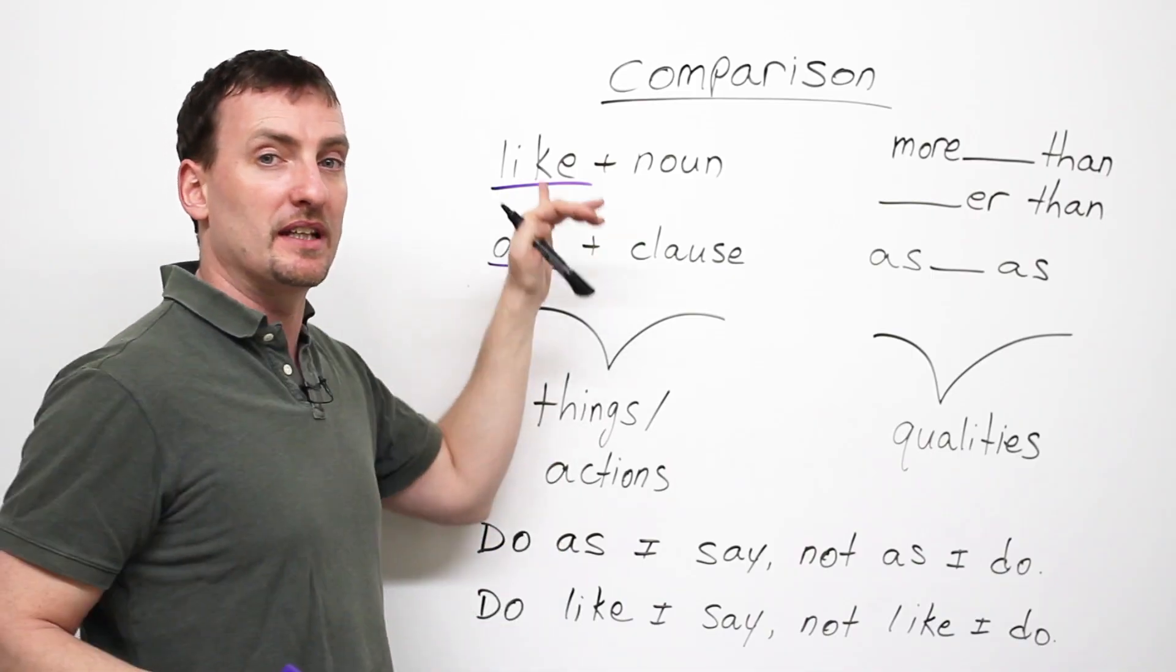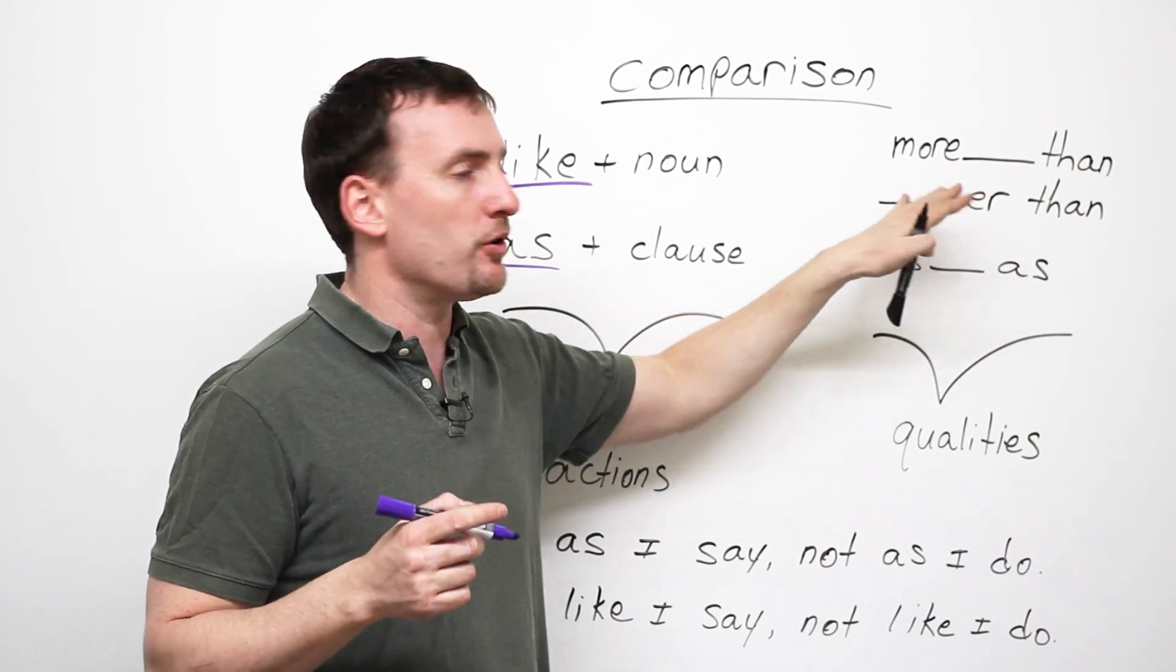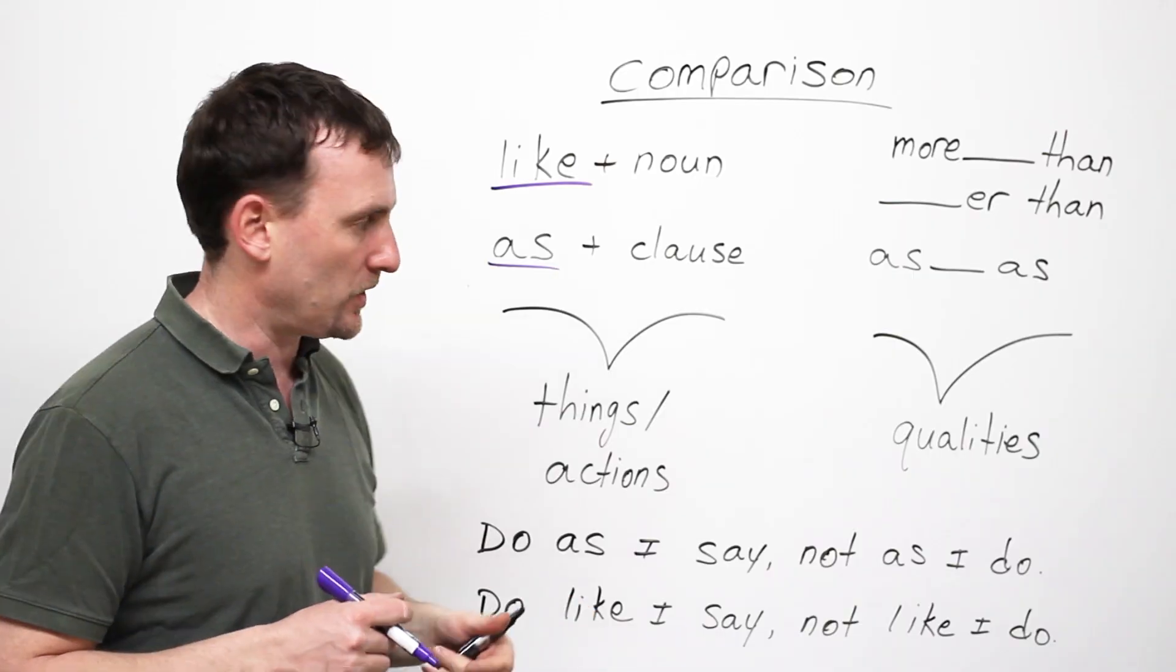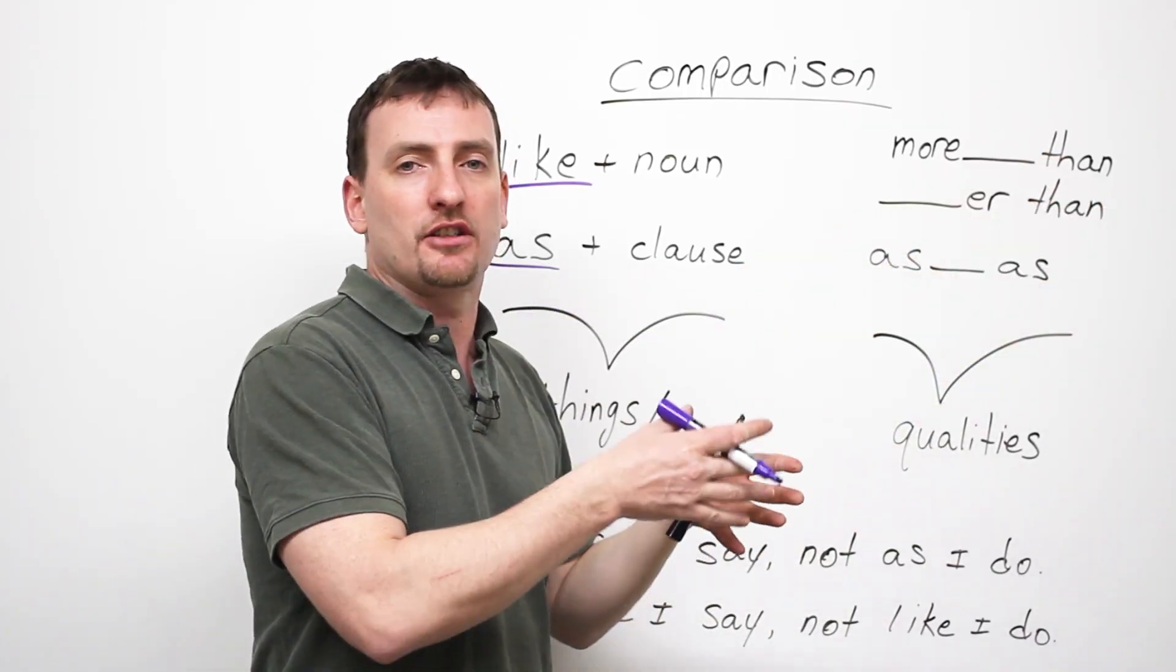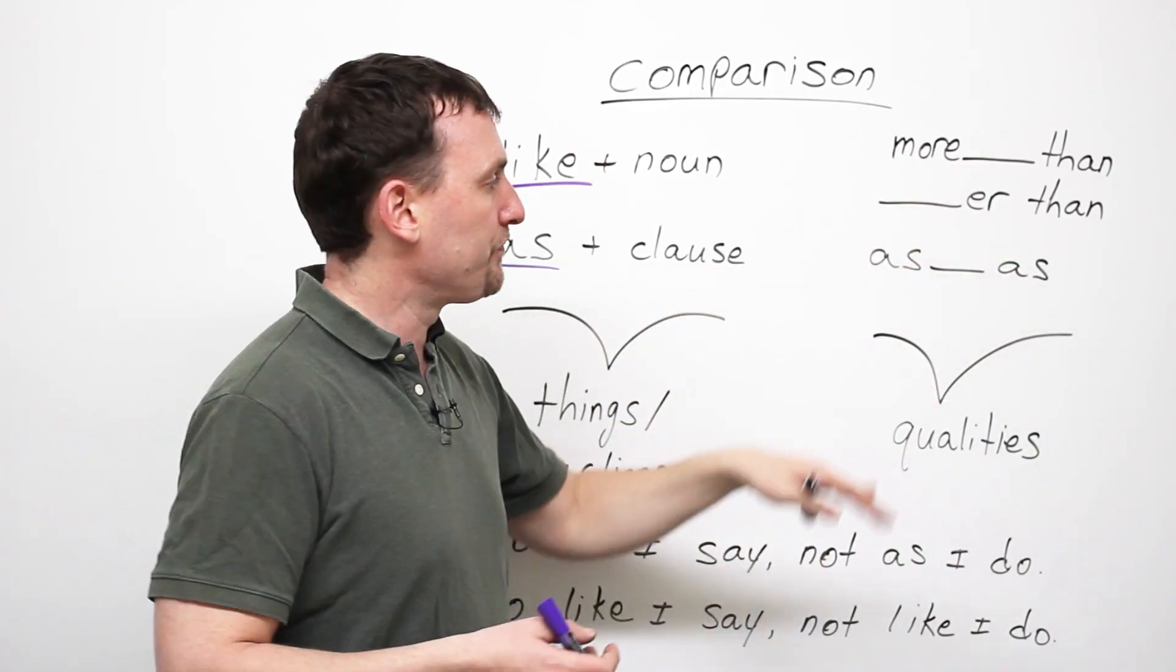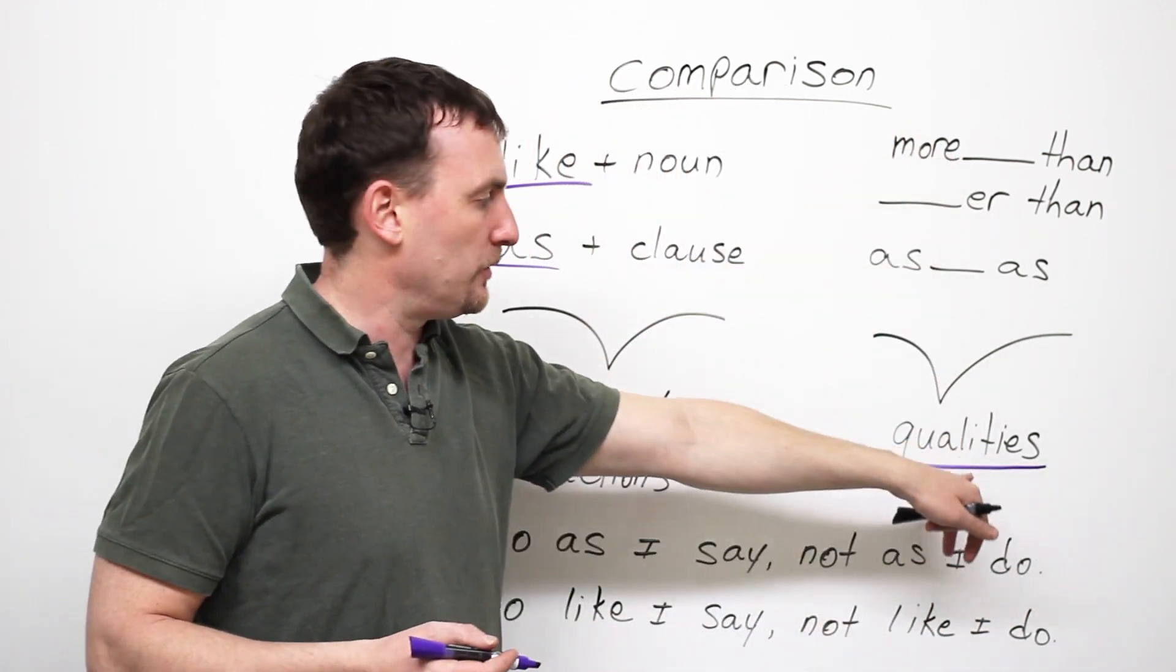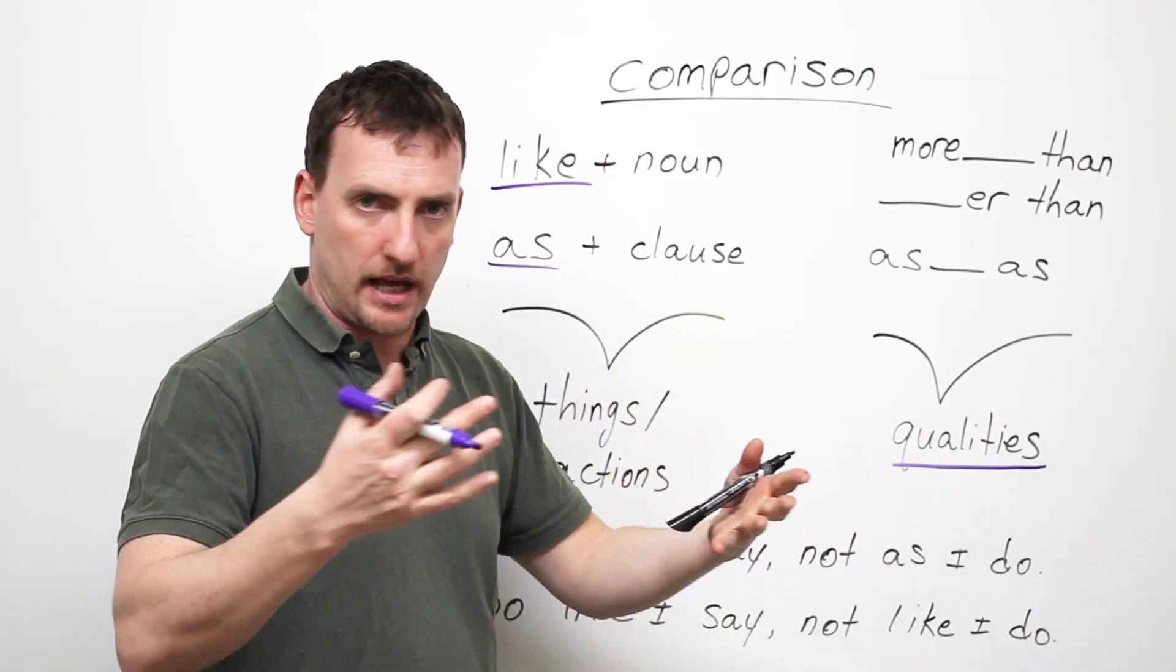We're going to focus on the difference between like and as. But I also want to look at this a little bit, more than or er than, as something as, because I want to make sure that you understand that these are two different ways of comparing. So when we use more, and usually an adjective, more adjective than, for example, this car is more expensive than that car, or er, this car is cheaper than that car, or as, as, this car is as expensive as that car. What we are comparing with these ones, we're comparing qualities. Speed, height, weight, cost, shape, and so on.